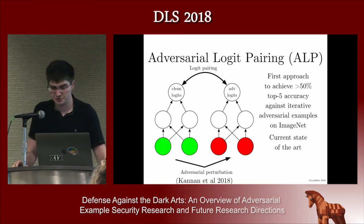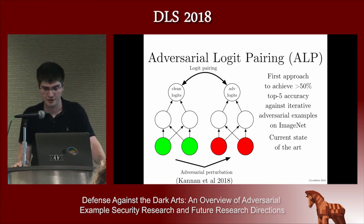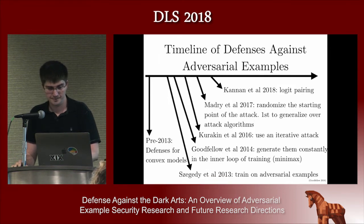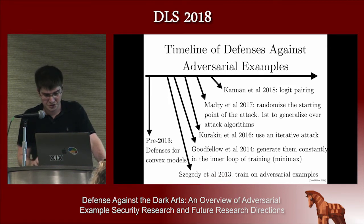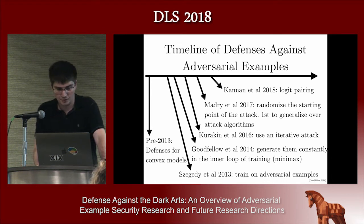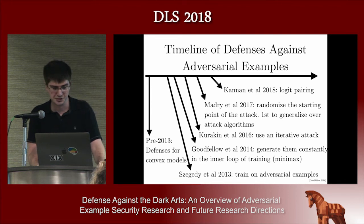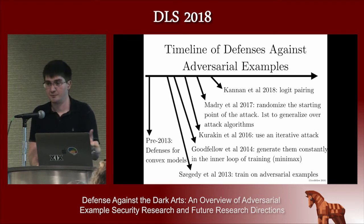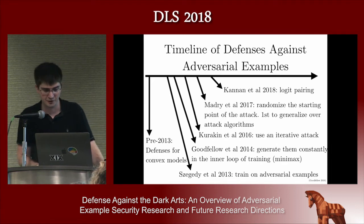Instead of saying the model should do well on the whole population of adversarial examples, you're additionally saying it should recognize that this adversarial cat is the same as the specific clean cat that generated it. On a more theoretical side, you can see adversarial logit pairing as a way of generalizing weight decay from shallow models to deep models. Overall, this was the first defense to achieve greater than 50% top-five accuracy against iterative adversarial examples on ImageNet, which is why it's the current state of the art — but as far as we know, this would not actually generalize out of the max norm ball.